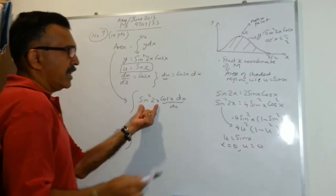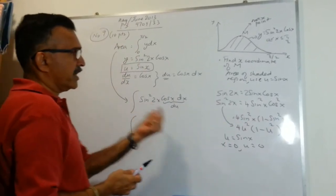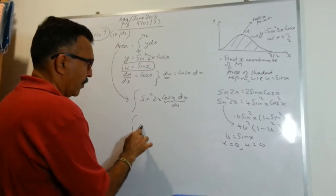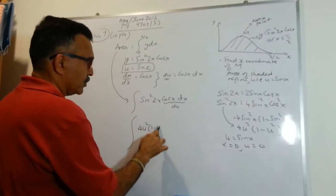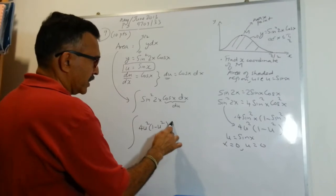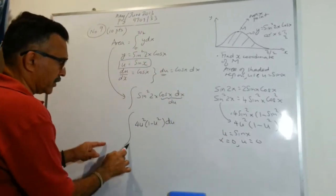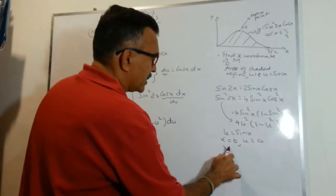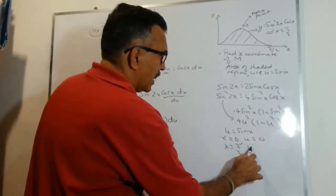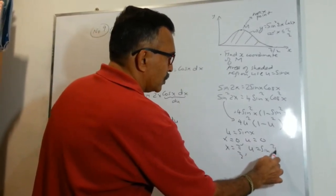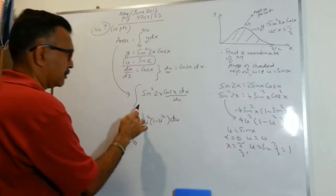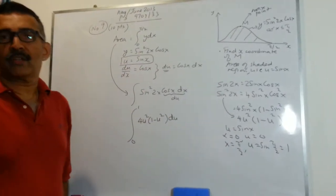Let's copy what we have here. Let's bring it over to this side. Sin squared 2x will be 4 u squared times 1 minus u squared du. When x is 0, u is 0, so the lower limit will be 0. When x is π/2, u will be sin of π/2, which is 1. Let's plug it in here. We are ready to roll.